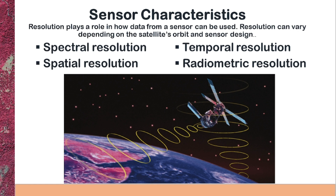How efficiently satellites capture information depends upon the characteristics of that particular satellite. One characteristic that affects its performance is resolution, which depends on the satellite's orbit and sensor design. There are four types of resolution: spectral resolution, spatial resolution, temporal resolution, and radiometric resolution. If you want to learn about spectral and spatial resolution, kindly see my previous videos.